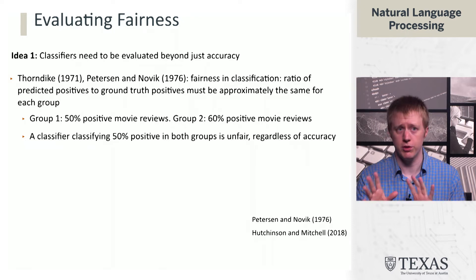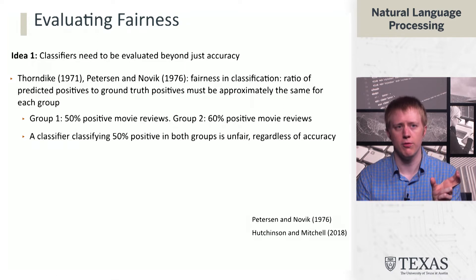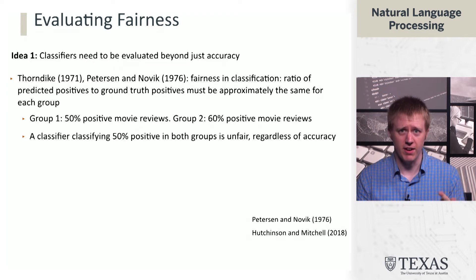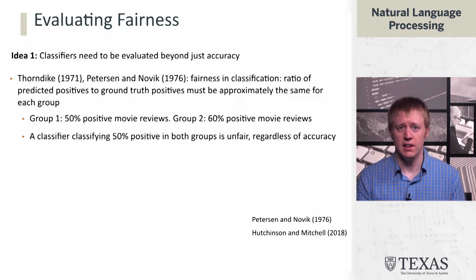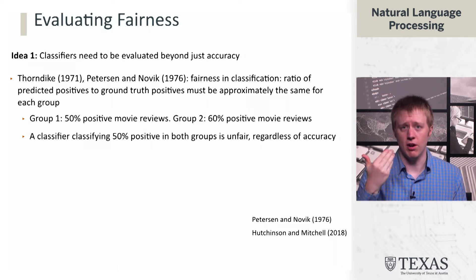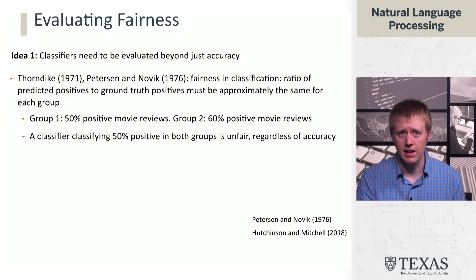For example, suppose we have two groups using our movie review sentiment data. In group one, the reviews are 50% positive, and in group two, 60% positive — maybe group one is comedies and group two is horror movies. If we have a classifier that predicts 50% positive in both groups, that's not fair, regardless of how accurate it is. The classifier could be getting 0% accuracy on group one and as high as 90% accuracy on group two, but it's still not giving group two a fair shake — there should be a higher number of positives in group two, but the classifier is under-predicting the positive rate.